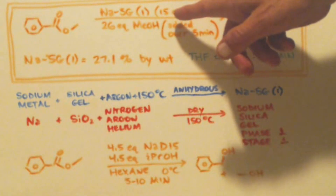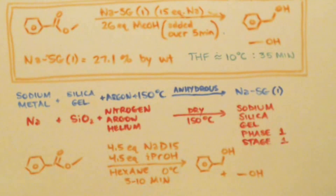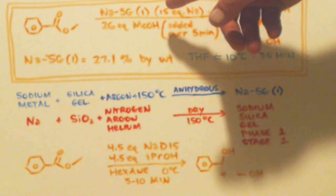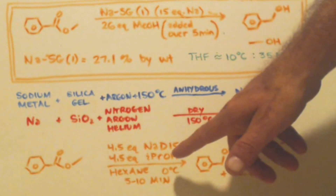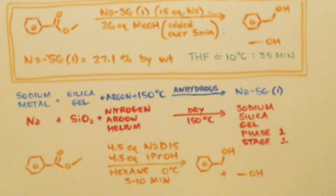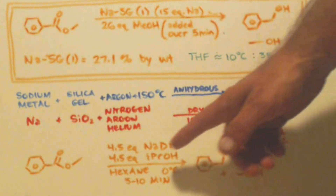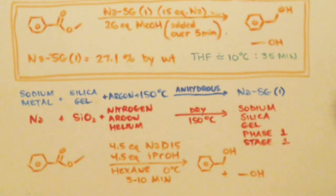Why does this use 15 equivalents of sodium and methanol, and this only uses 4.5? I don't know. Is it because the sodium D15 is a lot better than the sodium silica gel? Or is the isopropanol a better proton donor than the methanol? I doubt it has much to do with the solvent. If I had to pick between THF, diethyl ether, or hexane, I would pick hexane. This is a very good reaction - you're supposed to get very high yields. I'm guessing 90% or above.